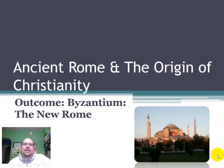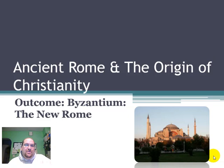Greetings and welcome to our fifth and final lecture relating to ancient Rome, the Origins of Christianity, which is our sixth unit. Today's outcome we're going to focus on Byzantium, the New Rome, which was the capital city of the Roman Empire after Emperor Constantine took over right around 300 AD. Please make sure that you have your Lecture 5 worksheet available and are filling it out as we go along with the lecture.